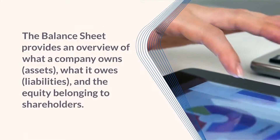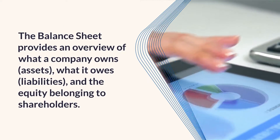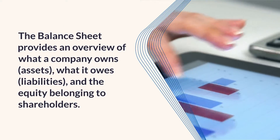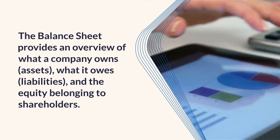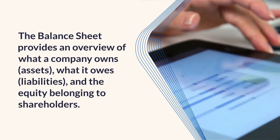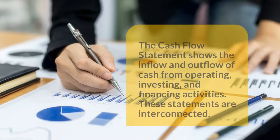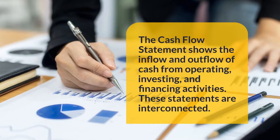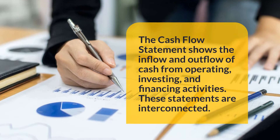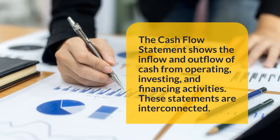The balance sheet provides an overview of what a company owns (assets), what it owes (liabilities), and the equity belonging to shareholders. The cash flow statement shows the inflow and outflow of cash from operating, investing, and financing activities.